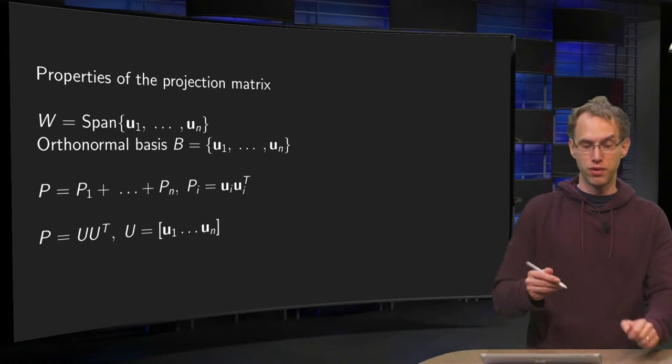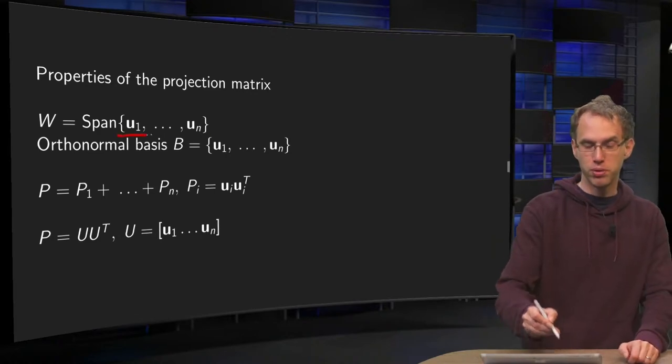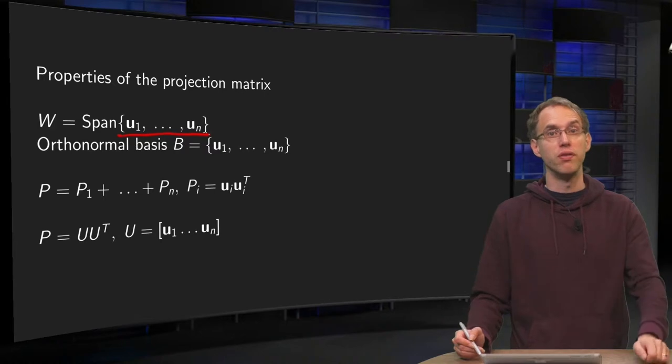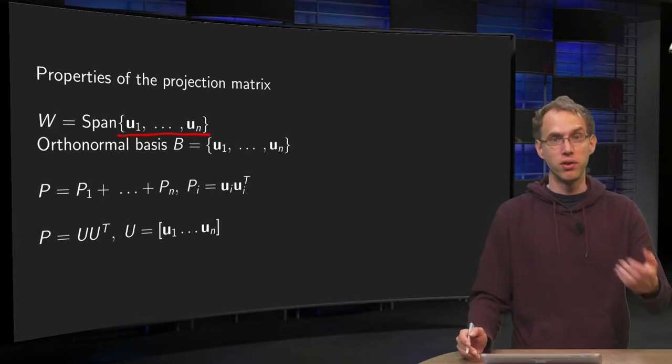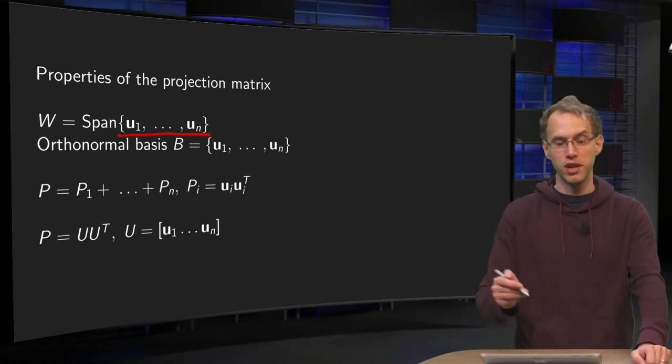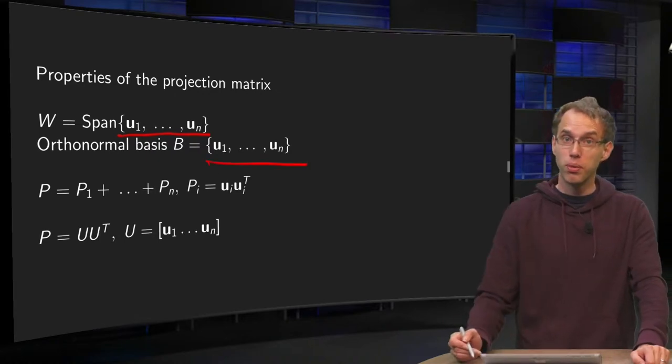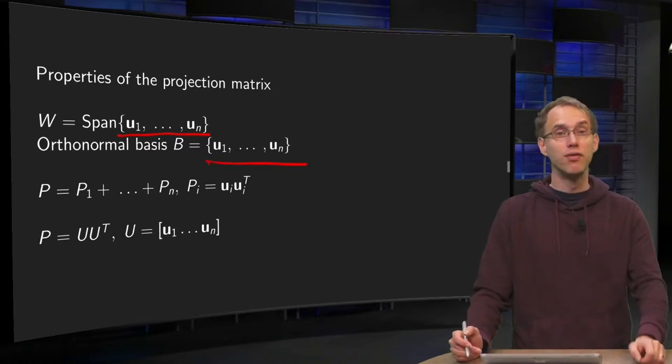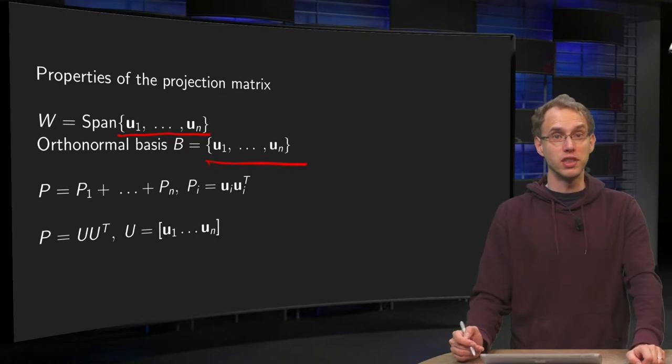First of all, if you have your W as a span of U1 up to Un, you have to make sure you have an orthonormal basis. If you don't have it, use Gram-Schmidt first and normalize, until you have an orthonormal basis.